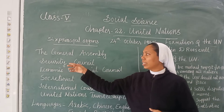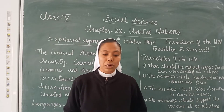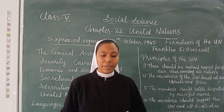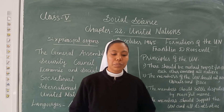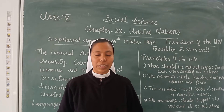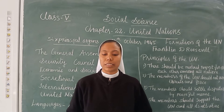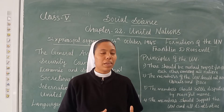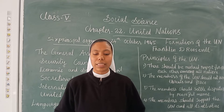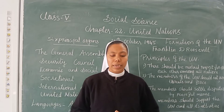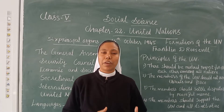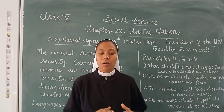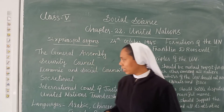The second organ is the Security Council, which is responsible for maintaining international peace in the world. It has 15 members — 5 are permanent and 10 are elected for a 2-year term. The five permanent members are the United States, the United Kingdom, France, Russia, and China.